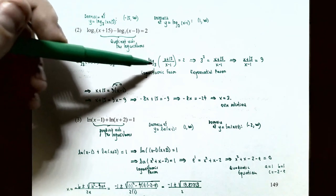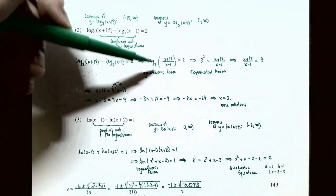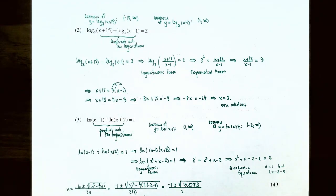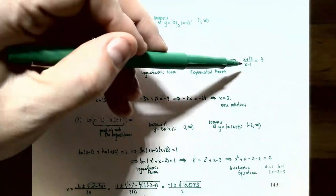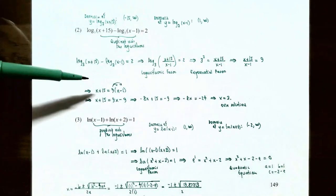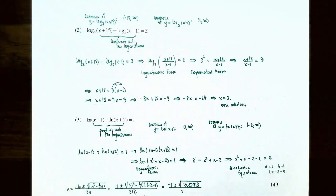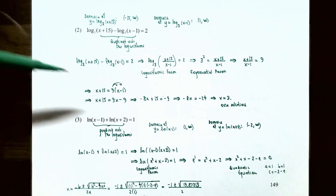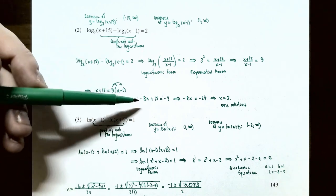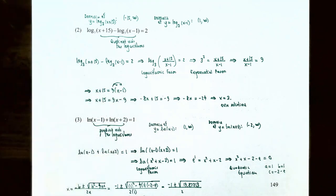So (x+15)/(x−1) = 9. Multiply both sides by (x−1) to eliminate the denominator: x+15 = 9(x−1). Distributing gives x+15 = 9x−9. Isolating x: subtract 9x to get −8x+15 = −9, then subtract 15 to get −8x = −24, so x = 3.